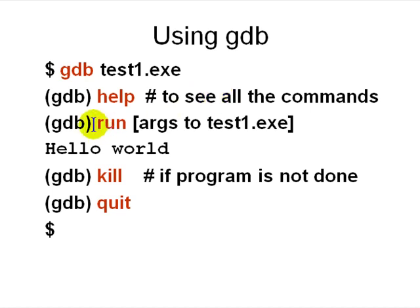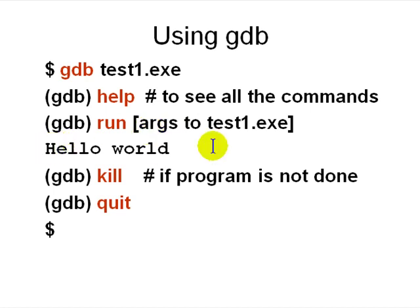You say run followed by the arguments to the executable file. The program runs and you get output like 'hello world'. If it gets stuck you say kill to stop the program, and when you are done with GDB you type quit.